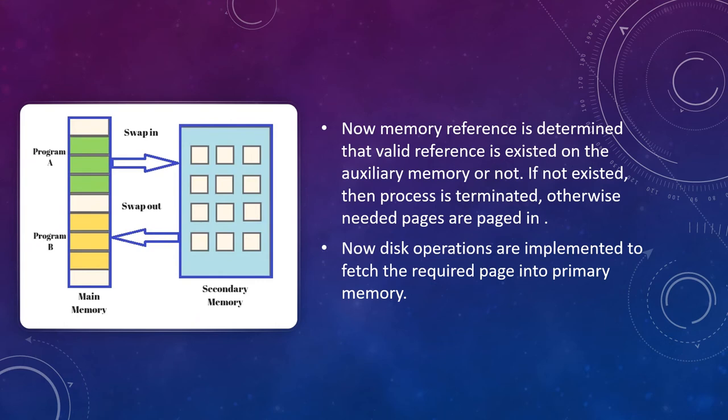The memory reference is checked to determine whether a valid reference exists on the auxiliary memory or not. If it does not exist, then the process is terminated; otherwise, the needed pages are paged in. Disk operations are then performed to fetch the required page into primary memory.